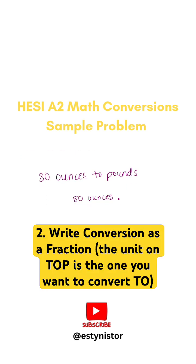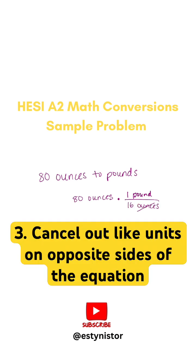What we do is create a fraction and multiply by that fraction: one pound on the top — that's what we're wanting to convert it to — and 16 ounces on the bottom. We can cross out the ounces on both sides, because those cancel each other out.